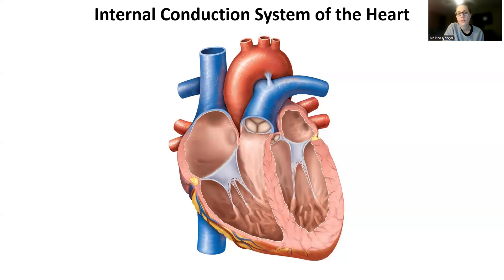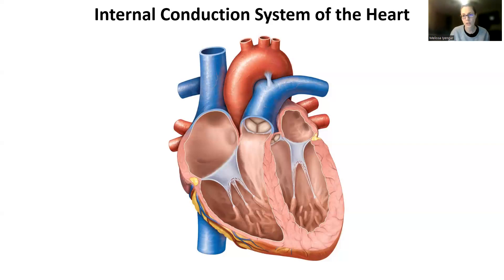Cardiac muscle cells are not using nerves from the brain. They're going to use special cells that are inside of the heart to cause the muscle cells around those special cells to depolarize and contract. The internal conduction system of the heart consists of specialized pacemaker cells in specific areas of the heart, and they depolarize in a sequence so that the heart contracts sequentially.